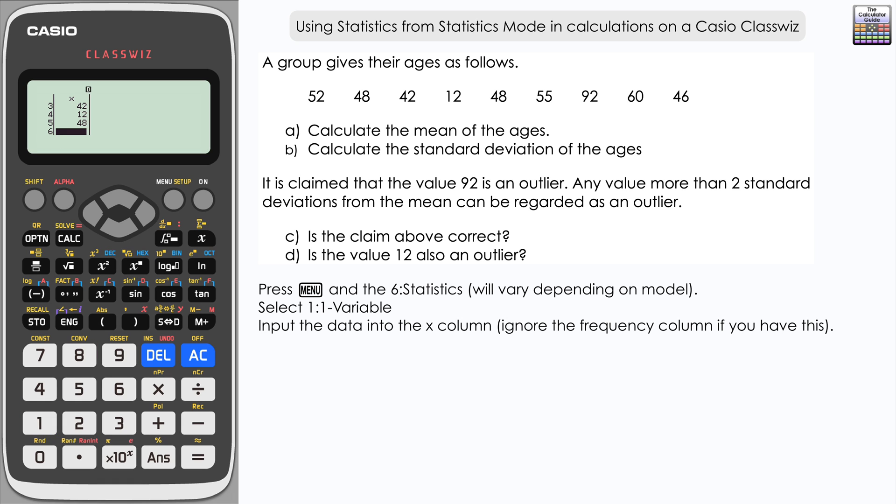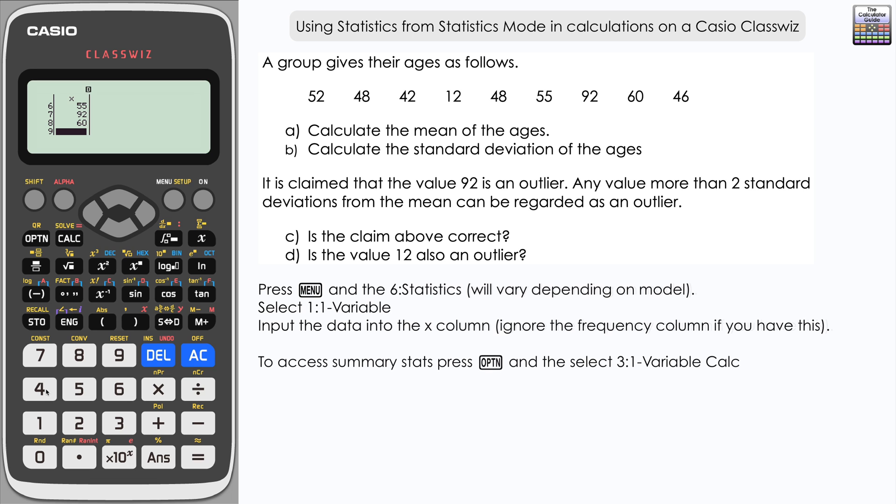Once you reach the last value, for the first two parts A and B, we're going to recall the summary stats to look at the mean and standard deviation. Press option, then 3 for one variable calc.